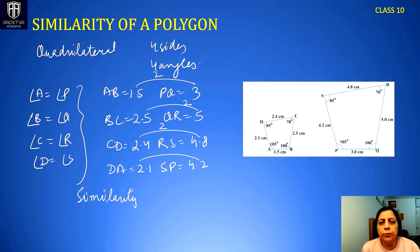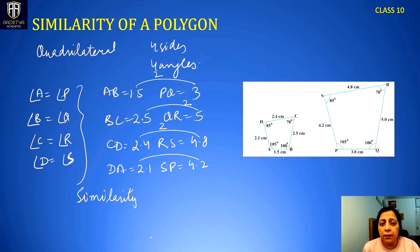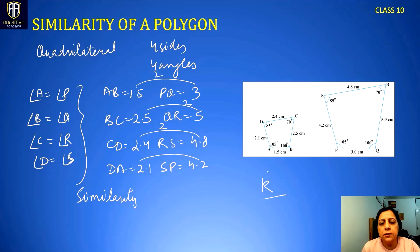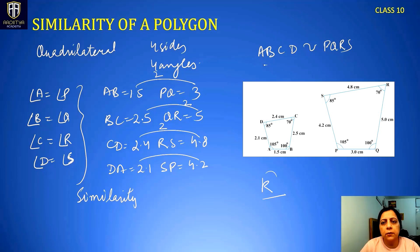That means angles have to be exactly the same so that the shape remains the same — the sides are inclined at the same angles to each other. But the sides have to be in a fixed ratio, meaning the sides of one polygon should be a fixed constant times the side of the other polygon. Then we say quadrilateral ABCD is similar to quadrilateral PQRS.